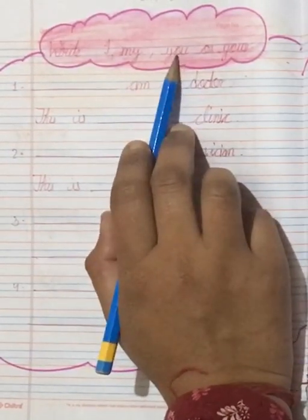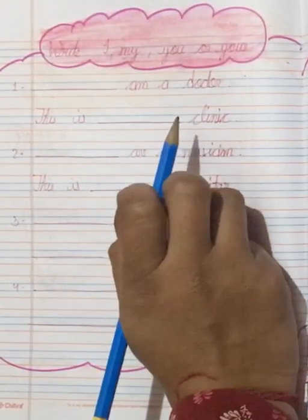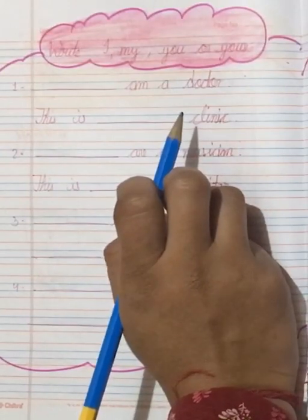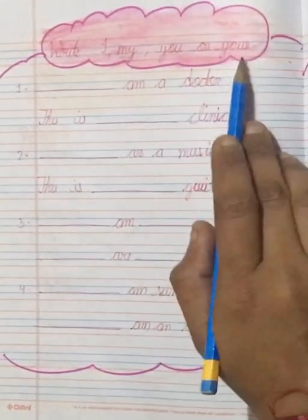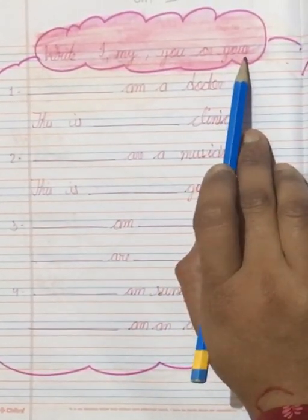Now you ka kis ke saath use karenghe? Hameisha R ke saath you ka use karenghe. Means you are my brother, you are my sister. Aisai R ke saath hamisha kya use karenghe? You. And your ka kaha use karenghe? Your ka bhi kisi ke name ke saath use karenghe, your ka.